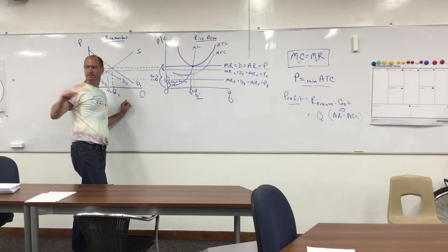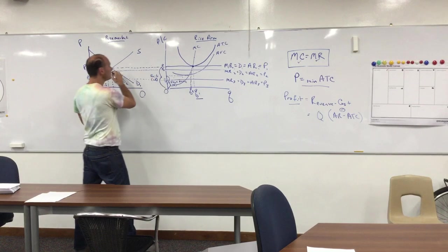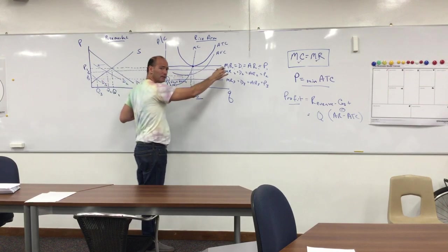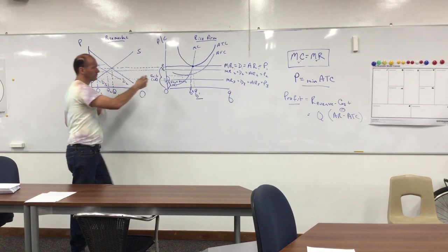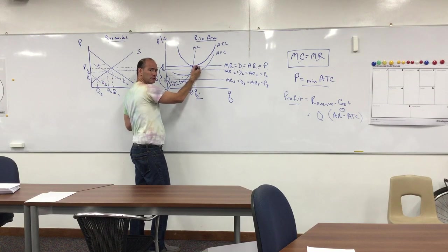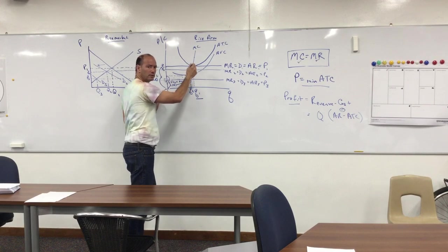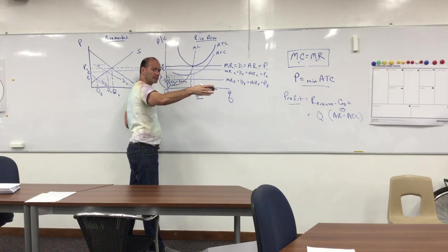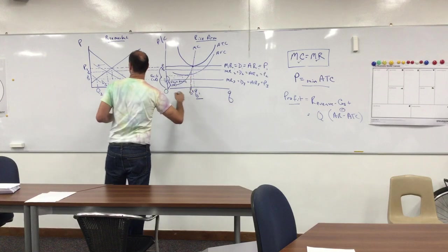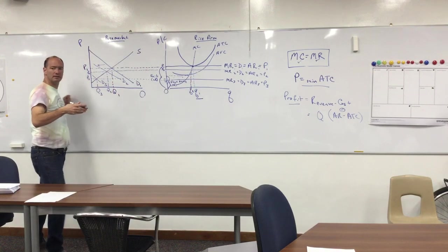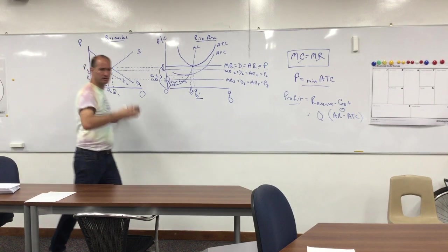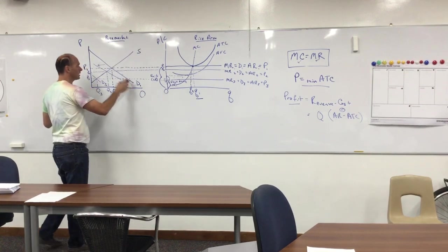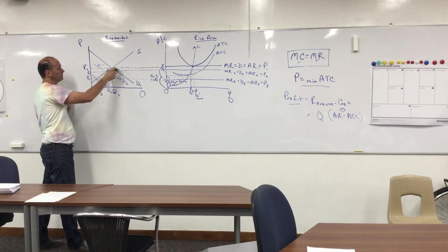What we're drawing at this point is a perfectly competitive rice market in long-run equilibrium, where the price of the good is at the minimum of average total cost. Now let's assume a report comes out saying rice causes some terrible disease — consumption of rice causes cancer. That's going to cause the demand for rice to reduce from D1 to D2.